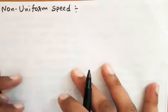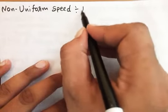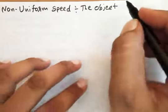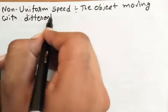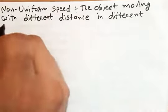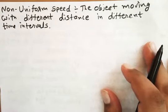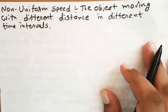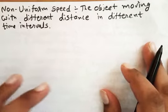Now we are going to talk about non-uniform speed. In non-uniform speed, different distances are covered in the same time intervals. For example, in 15 seconds the object covers 15 meters, then in the next 15 seconds it covers 5 meters, then 10 meters. The time intervals are the same but the distance covered is not the same — that is why it is called non-uniform speed.